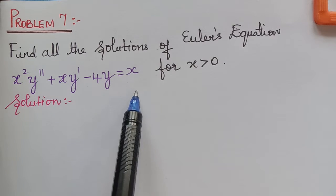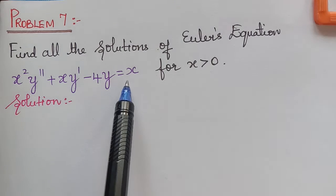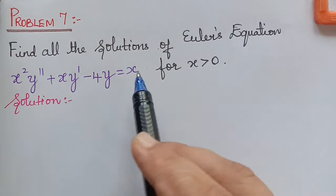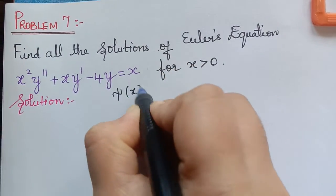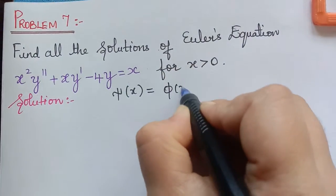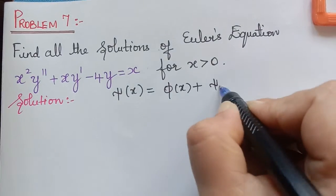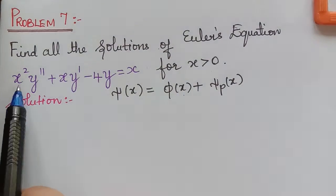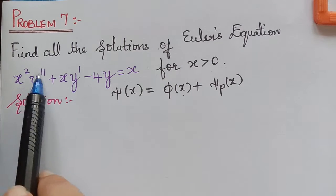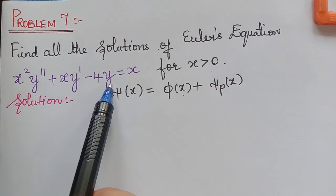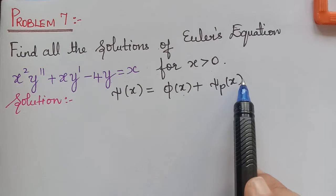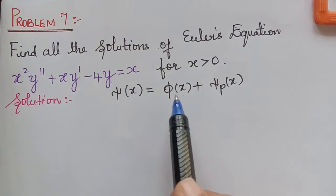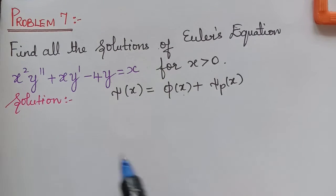This is a non-homogeneous Euler's equation because the right-hand side is x. The solution will be of the form ξ(x) = φ(x) + ξₚ(x), where φ(x) is the solution of the homogeneous equation x squared y double dash plus x y dash minus 4y equals 0, and ξₚ(x) is the particular integral for L(y) = x.